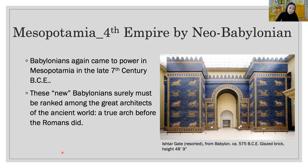After Assyria, the Babylonians came to power again in Mesopotamia in the late seventh century BCE, forming a kingdom called the Neo-Babylonian empire. These new Babylonians surely must be ranked among the great architects of the ancient world. Look at this gate architecture — it is beautiful and sophisticated, built in the late seventh century BCE. They developed the true arch and mastered decorative design for architecture, even before the ancient Romans did.